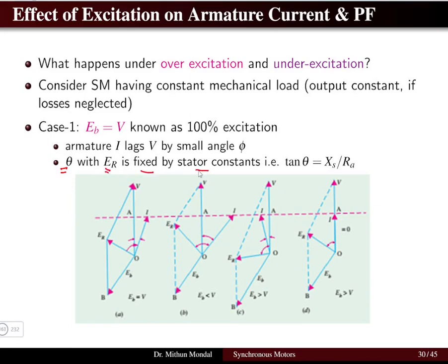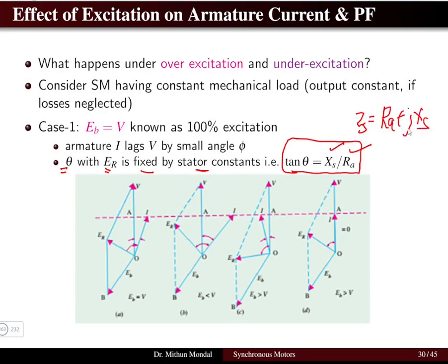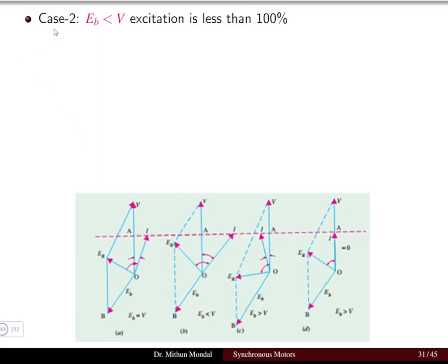The coupling angle theta with respect to the resultant EMF is fixed by the stator constants — that is, the synchronous reactance and the armature resistance. We can get the value of tan θ = Xs / Ra, which is the imaginary part divided by the real part, since the synchronous impedance Zs = Ra + j·Xs. So the real part is the resistance and the imaginary part is the reactance, giving tan θ = Xs / Ra. Now, case two.